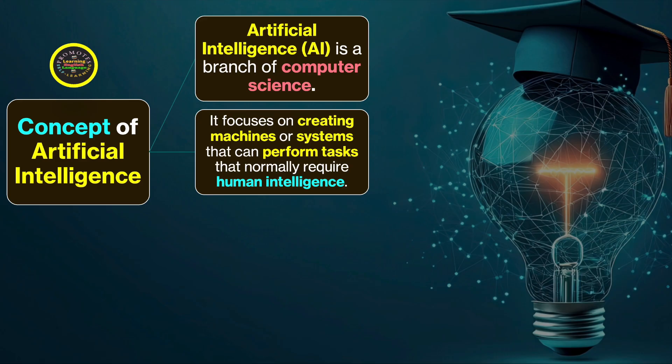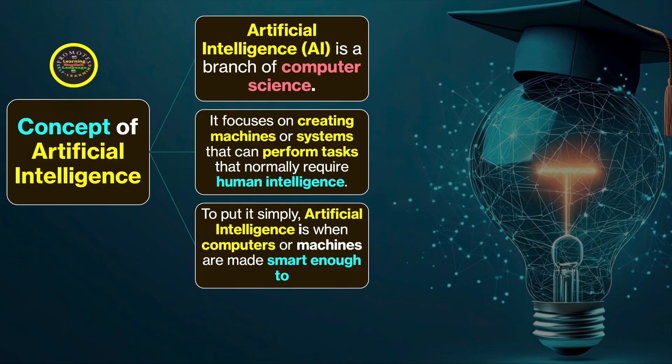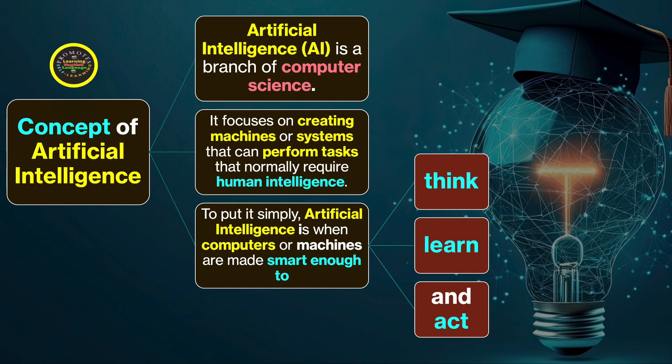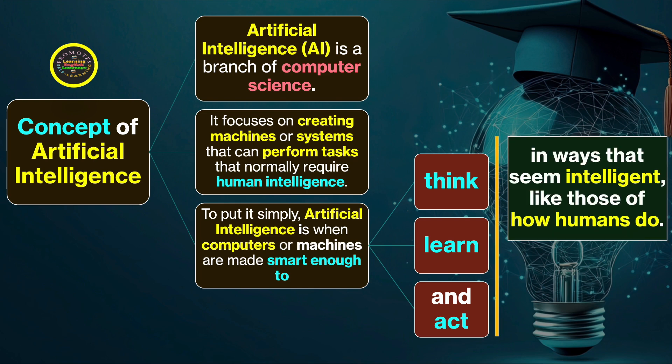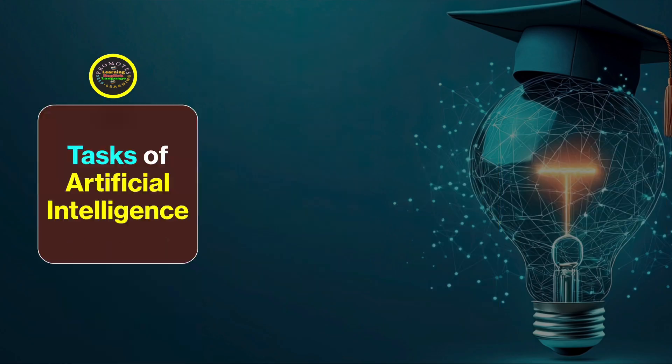To put it simply, artificial intelligence is when computers or machines are made smart enough to think, to learn, and act in ways that seem intelligent like those of how humans do. That is basically the fundamental idea behind artificial intelligence. Now we move on to the next idea: tasks of artificial intelligence.